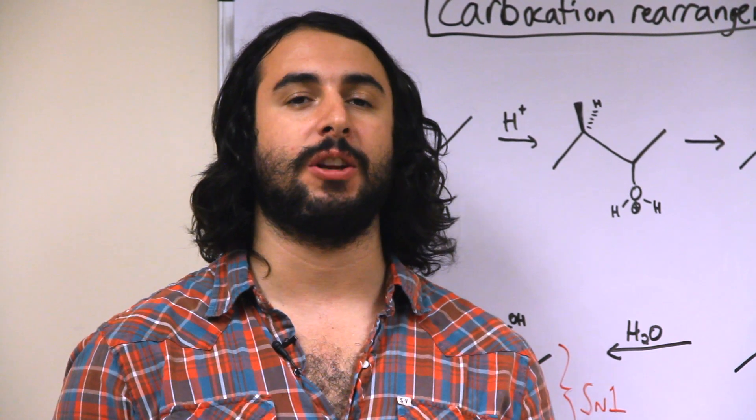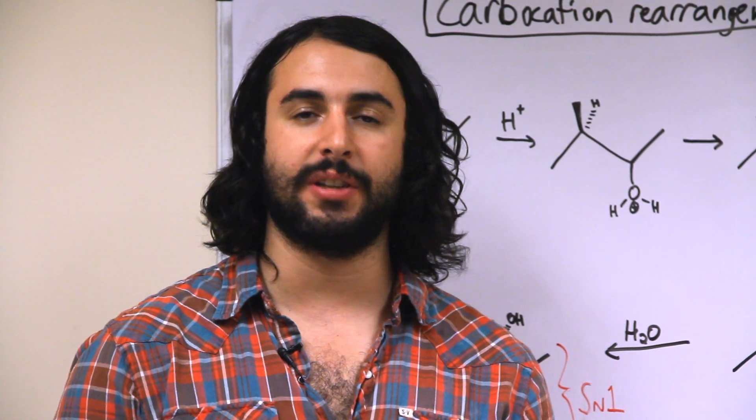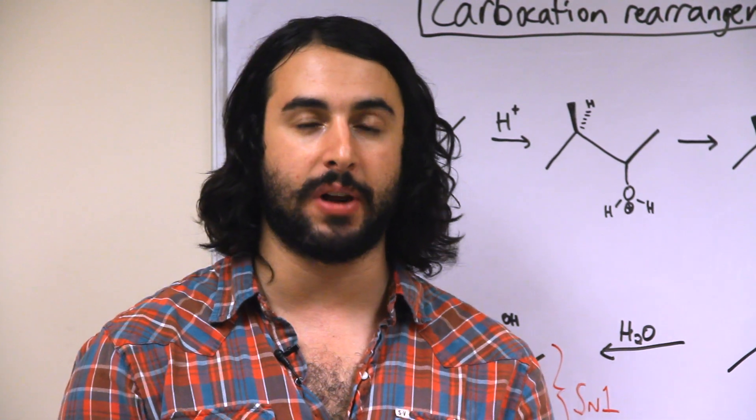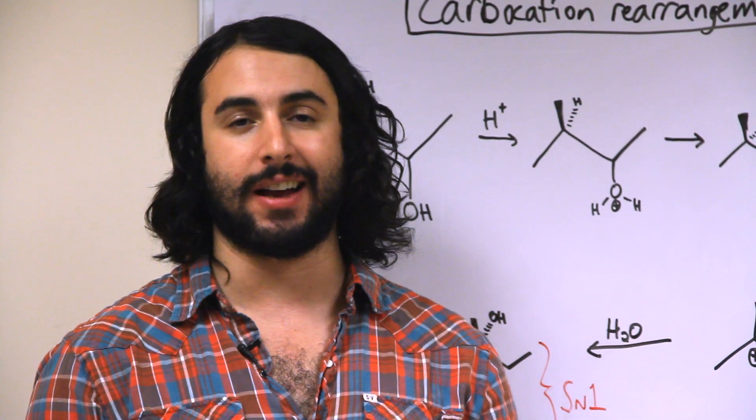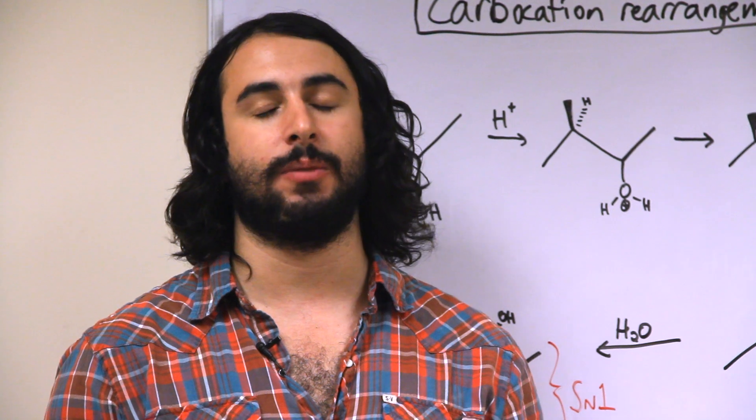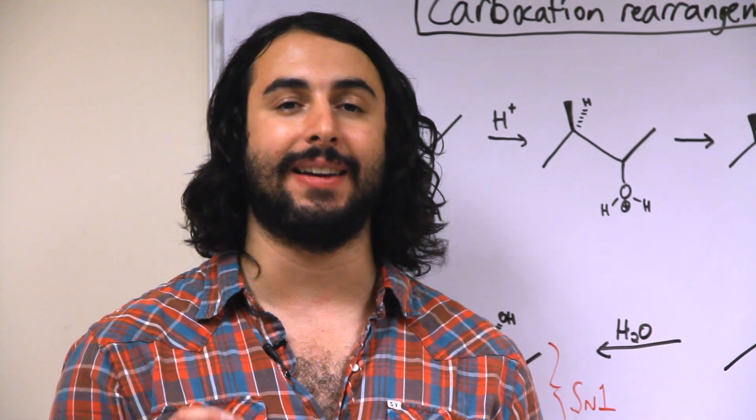So to take a look at carbocation rearrangement, let's revisit some old reactions. We're going to take a look at the E1 and SN1 reactions, but this time they're going to be acid catalyzed. Remember that the E1 and SN1 reactions have carbocation intermediates.